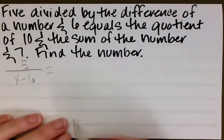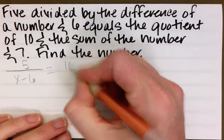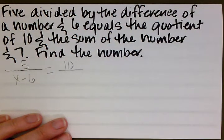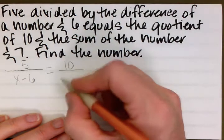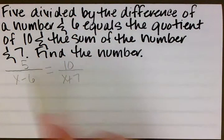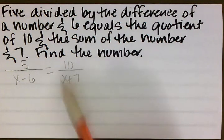We have the quotient of 10, so that's in our numerator, and the sum of the number and 7. So the quotient of 10 and the sum of the number and 7 looks like 10 divided by x plus 7.